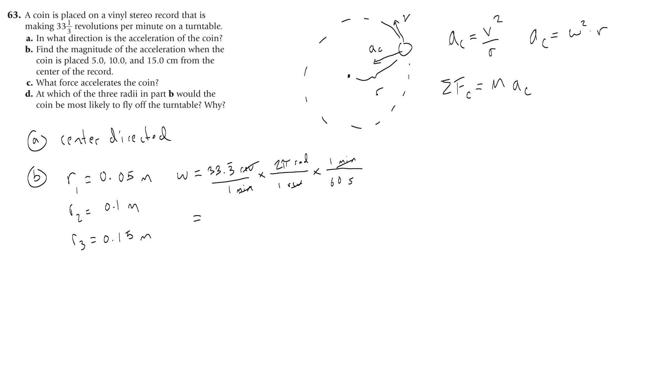Okay, so 33.3 repeating times 2 pi divided by 60 is going to give you, we'll just round it to 3.5 radians per second.